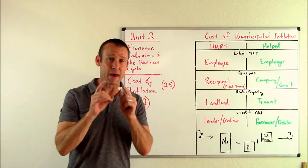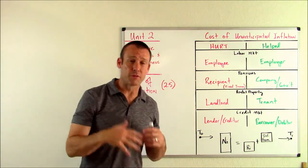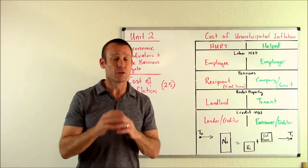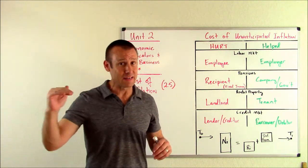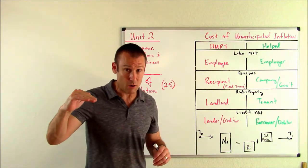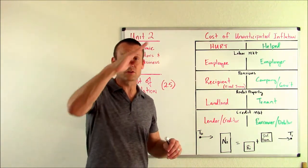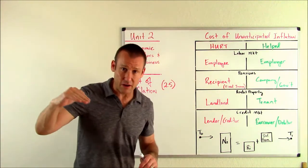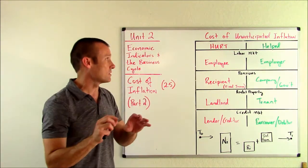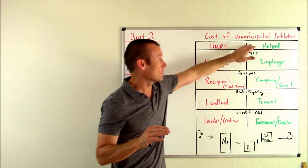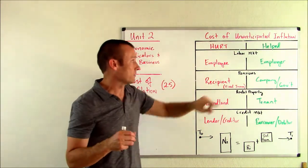That means the value of the dollar went down by more than we anticipated. The inflation rate is when prices of goods and services go up — the purchasing power of the dollar goes down. If the price of goods and services go up by more than expected, the value of the dollar is going to go down by more than expected. We're talking about who's hurt and who's helped across these four broad areas.